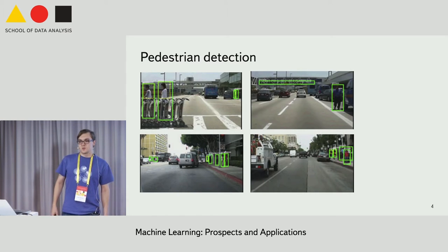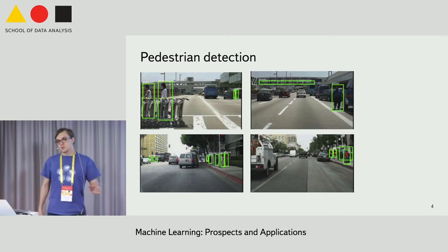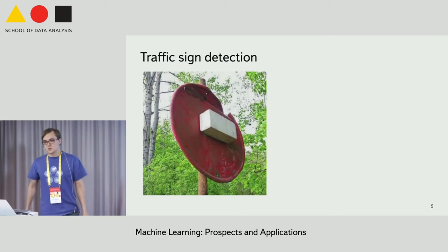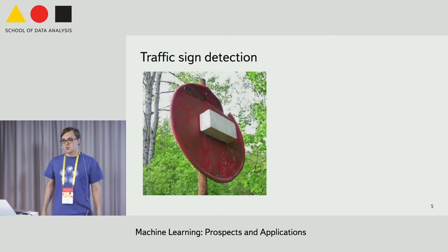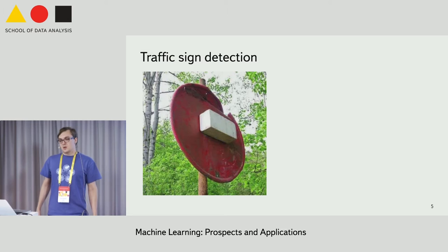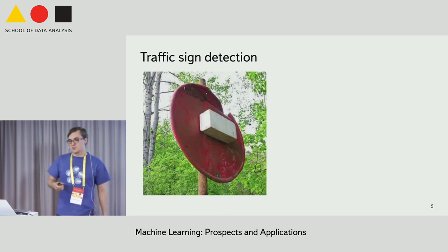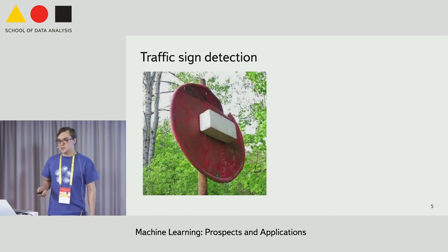Pedestrian detection challenges include different light conditions, occlusions, and strange poses. Traffic sign detection is a much easier task, but still challenging.